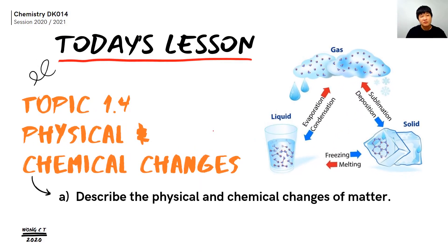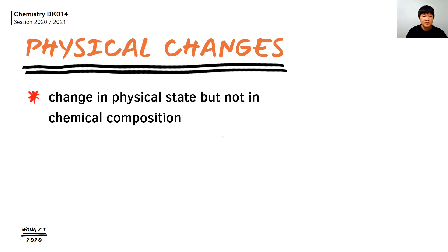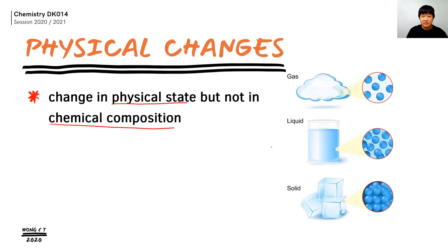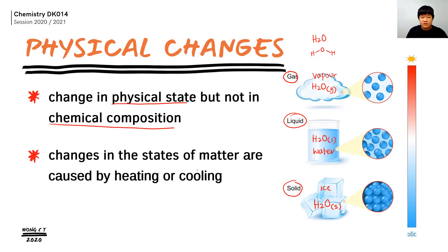Good day everyone. We come to our last subtopic of topic one, where we will talk about physical and chemical changes. Physical changes happen only at the physical state, but the chemical composition remains unchanged. A simple example: H2O solid is ice, H2O liquid is water, H2O gas is vapor. All three have the same chemical composition, H2O, but their physical states differ from each other.